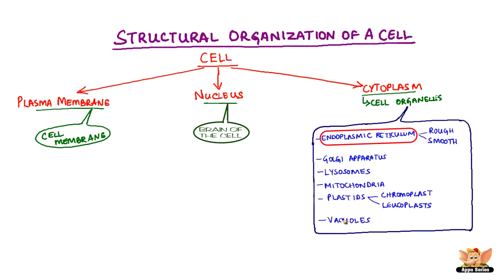The cell organelles are endoplasmic reticulum, which could be rough or smooth, Golgi apparatus, lysosomes, mitochondria, plastids, chromoplasts or leukoplasts, and vacuoles.